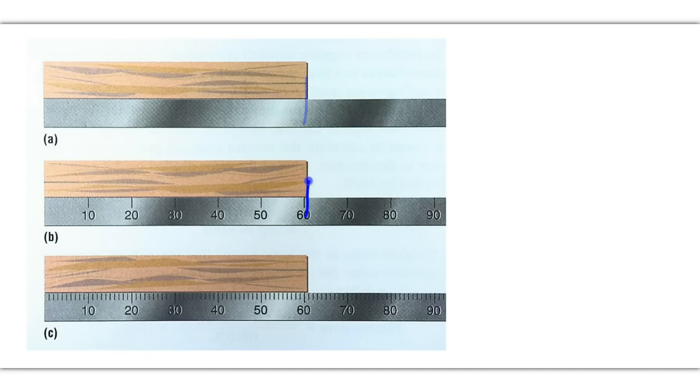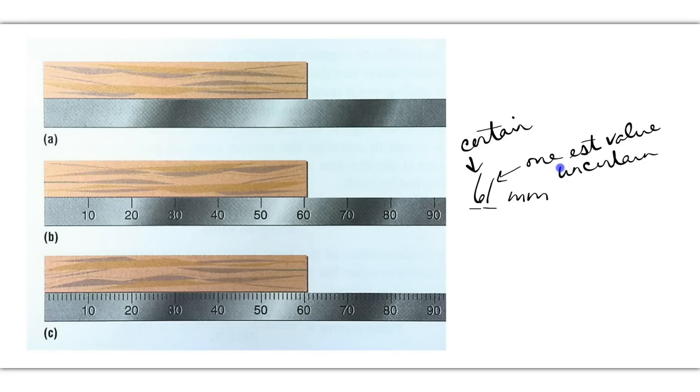On this ruler, we may estimate that it's 61 millimeters. And so the 60 we can be sure of, so this value is what we are certain of. And the 1 is the one estimated value, or the uncertain value in this number. And so 61 is the maximum number of significant figures that I could acquire from this particular ruler, letter B.